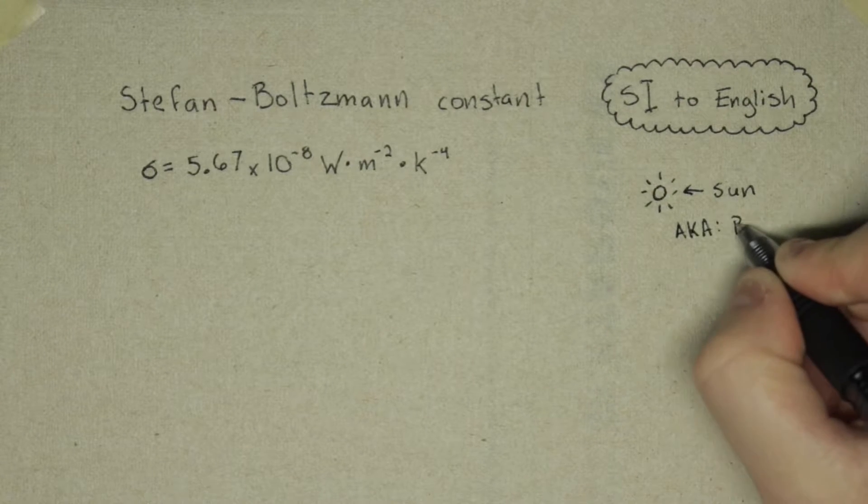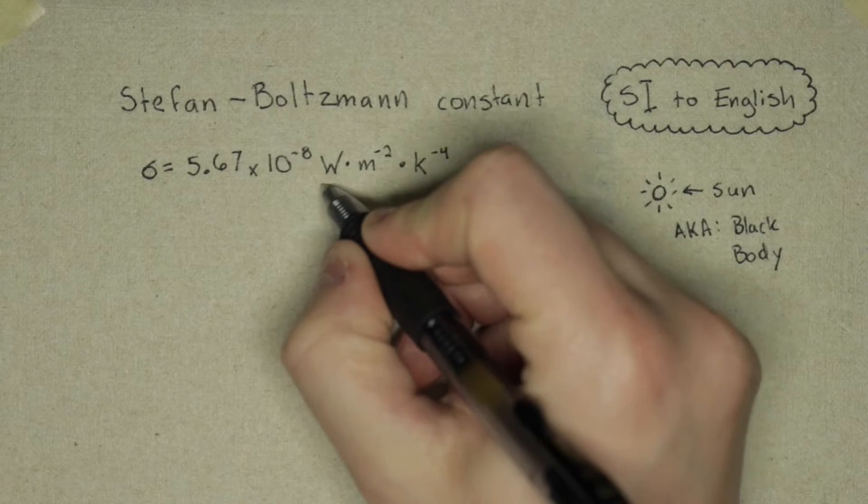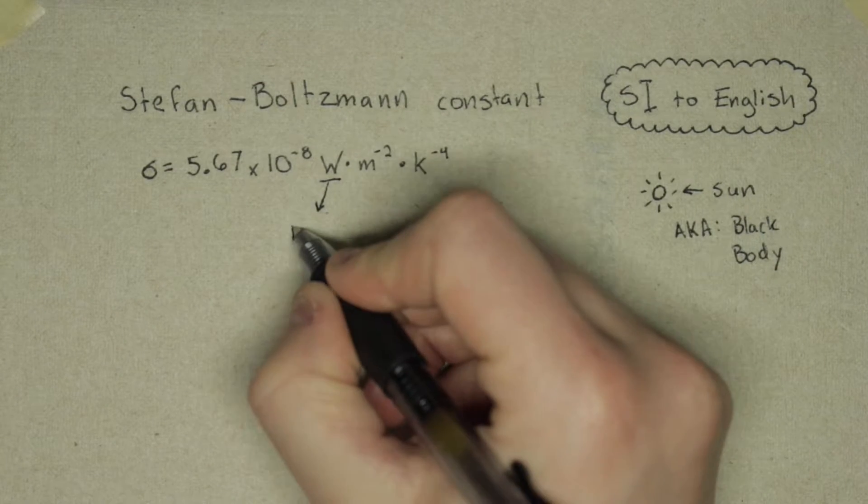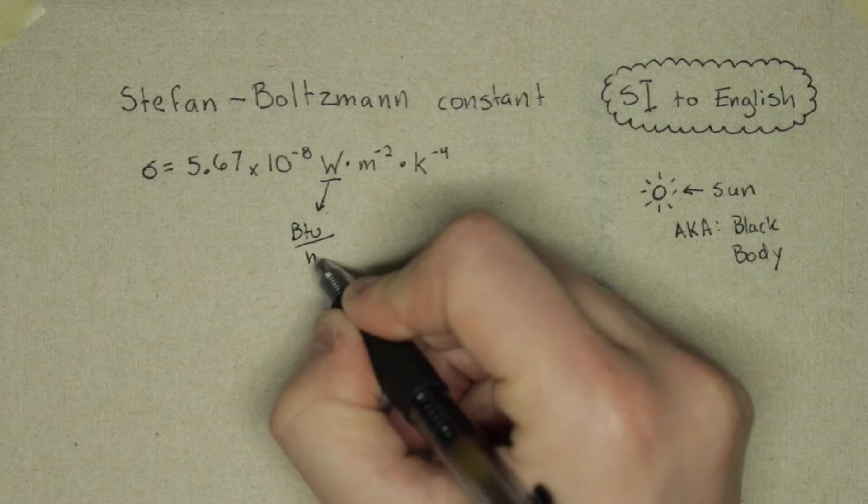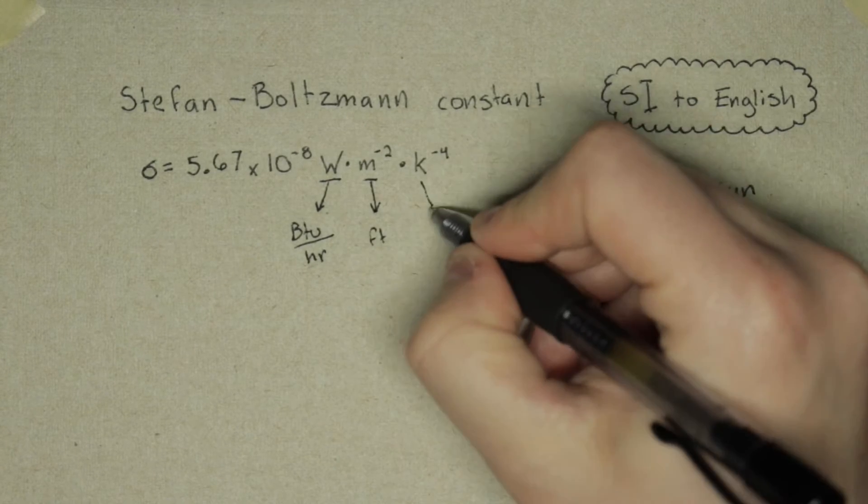An example would be a star or our sun. But that's enough of that. What we're going to do today is convert this constant from standard units, shown here, to English units.